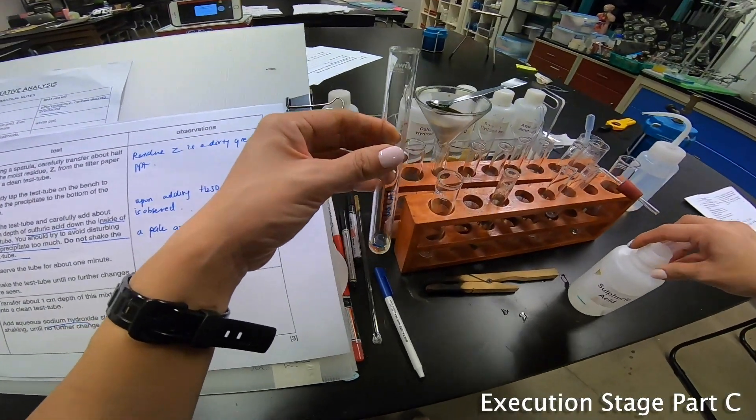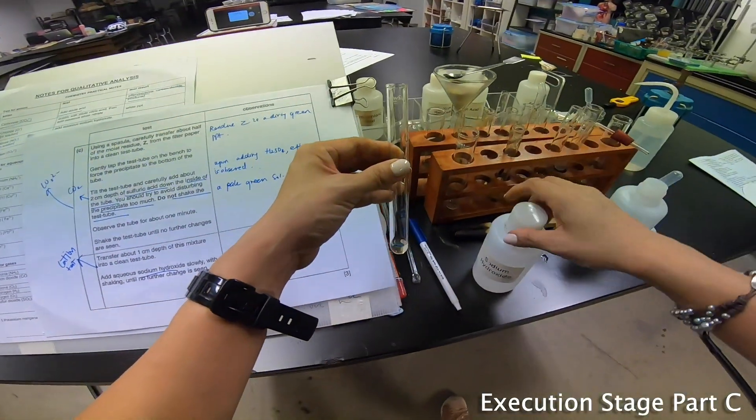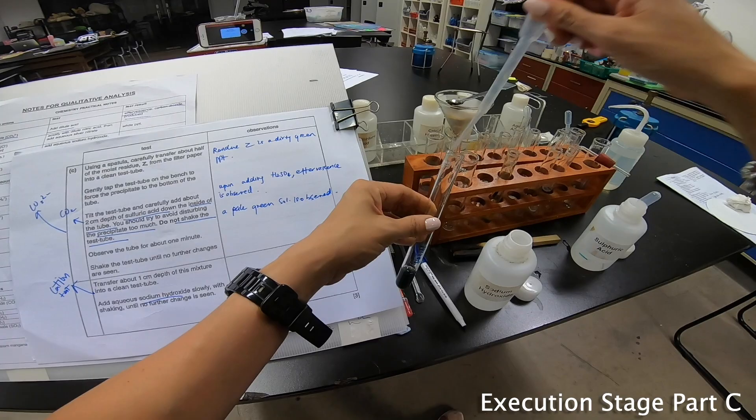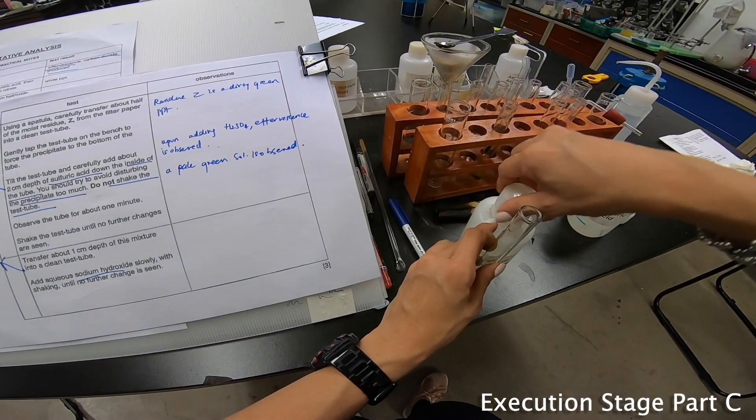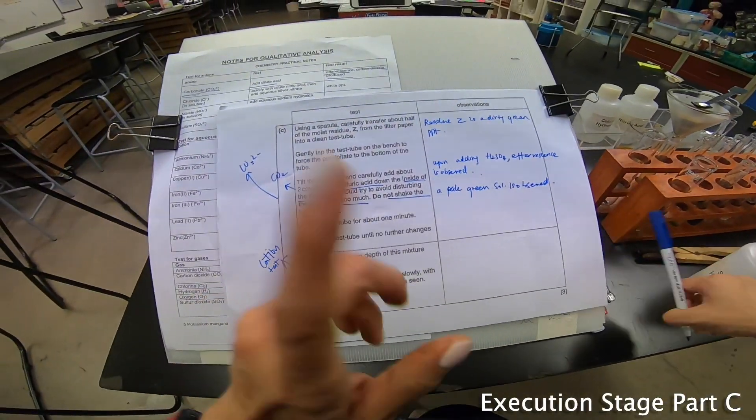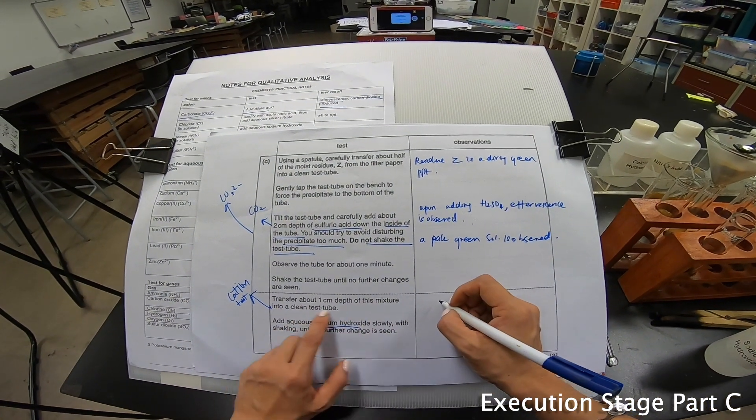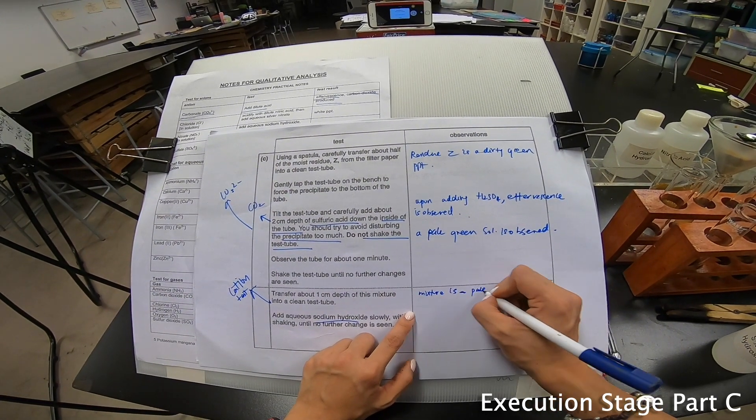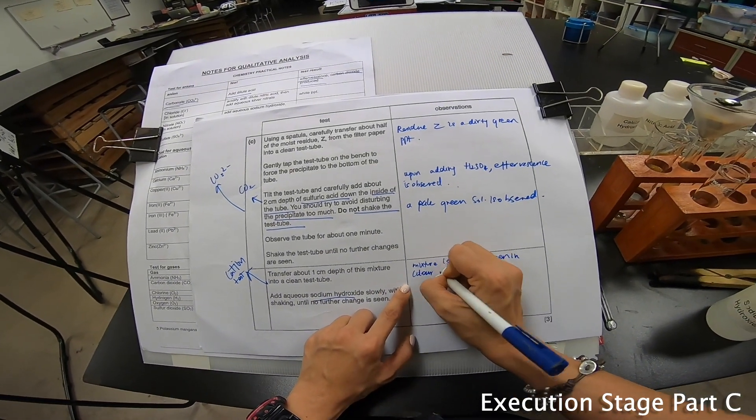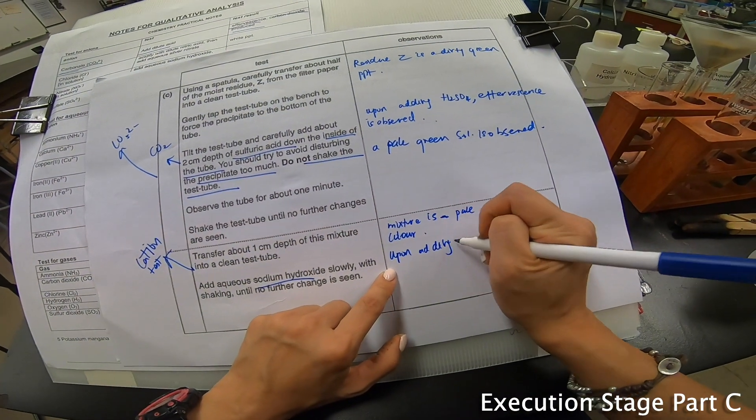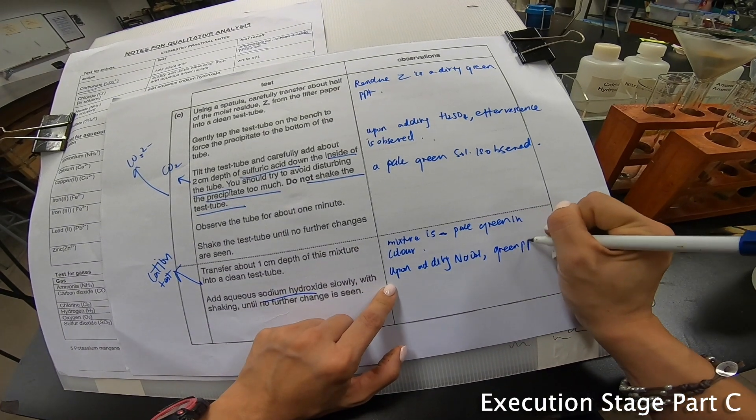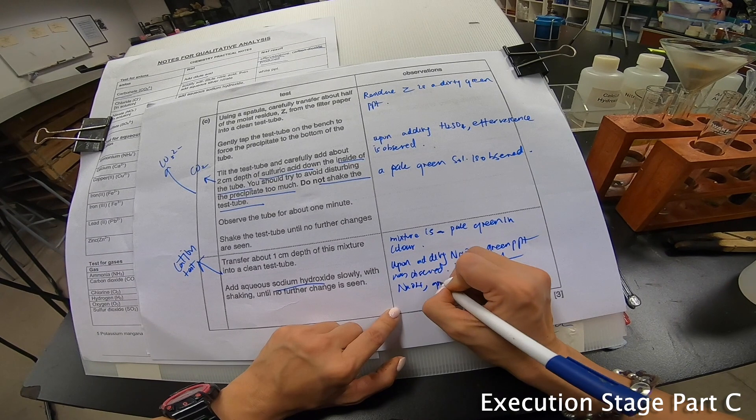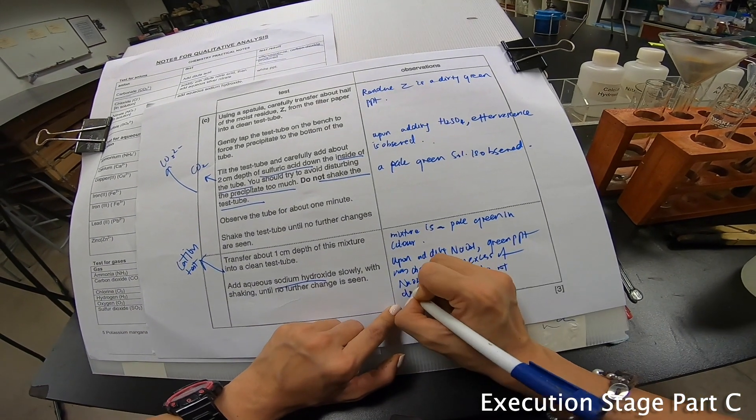Over here I'm going to add sodium hydroxide. Dirty green precipitate is formed. Add some more - dirty green precipitate does not dissolve in excess. Now you notice I do it pretty fast over here. Transfer one centimeter of this mixture. The mixture is pale green in color. Upon adding NaOH, a green precipitate was observed. In excess of NaOH, green precipitate does not dissolve.